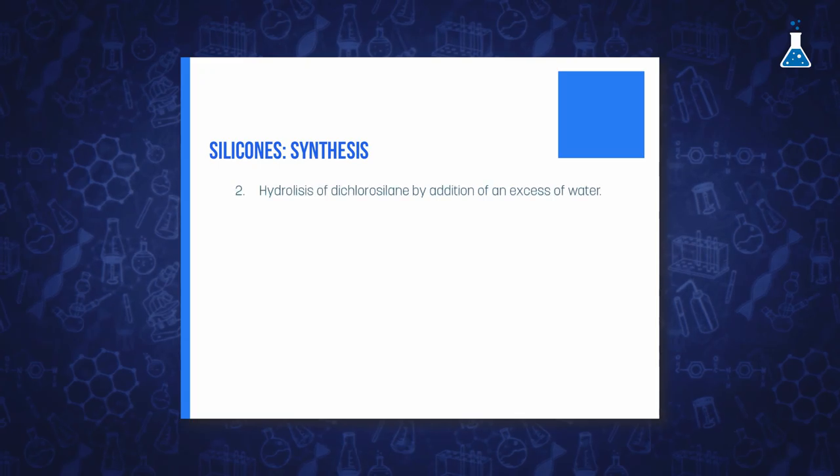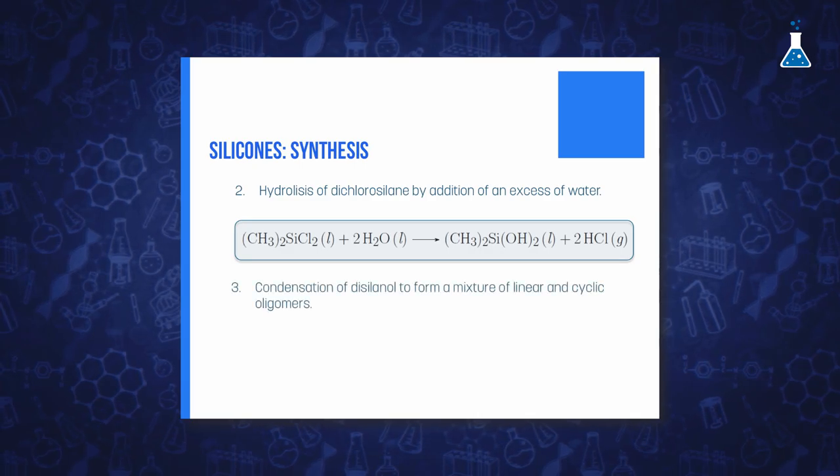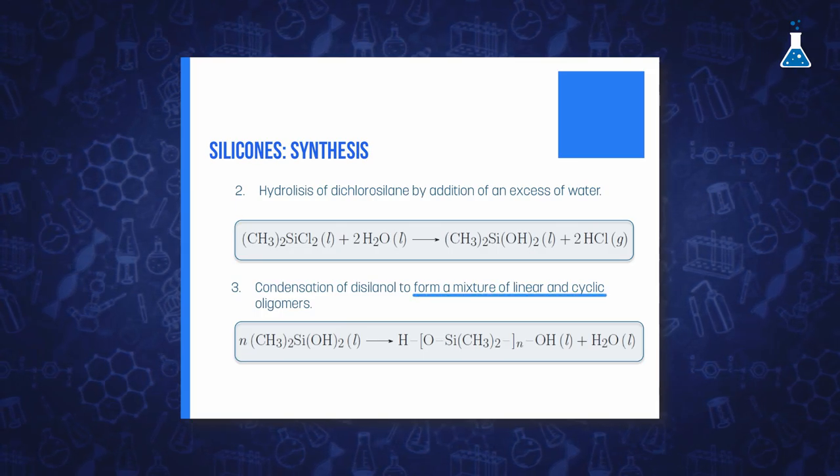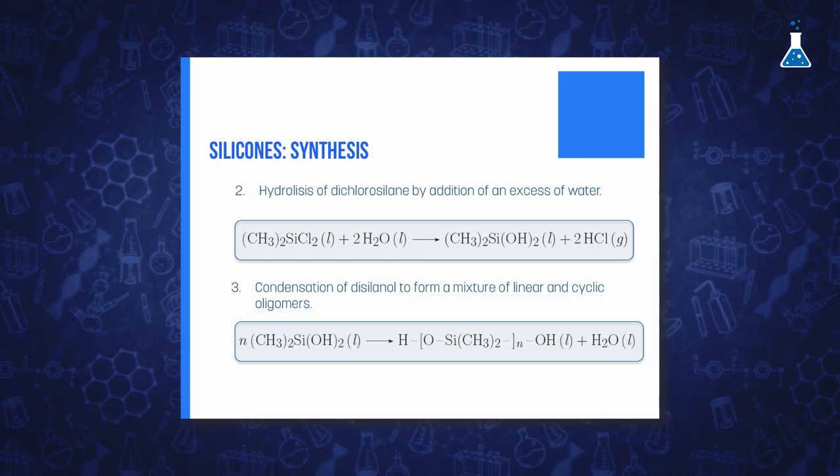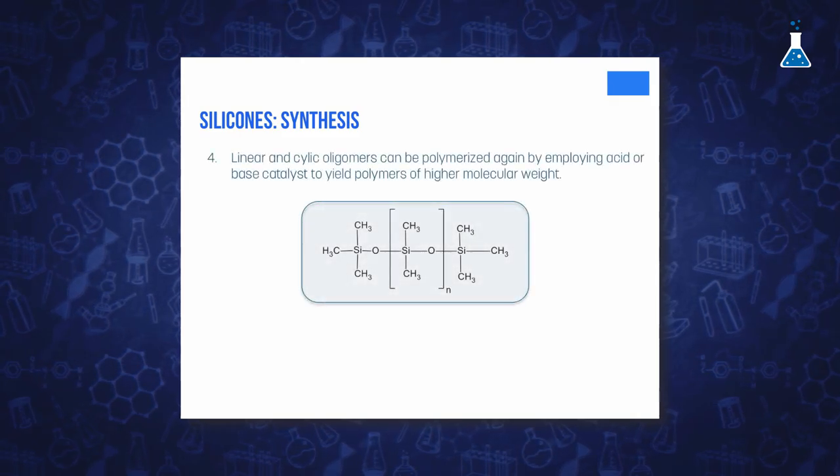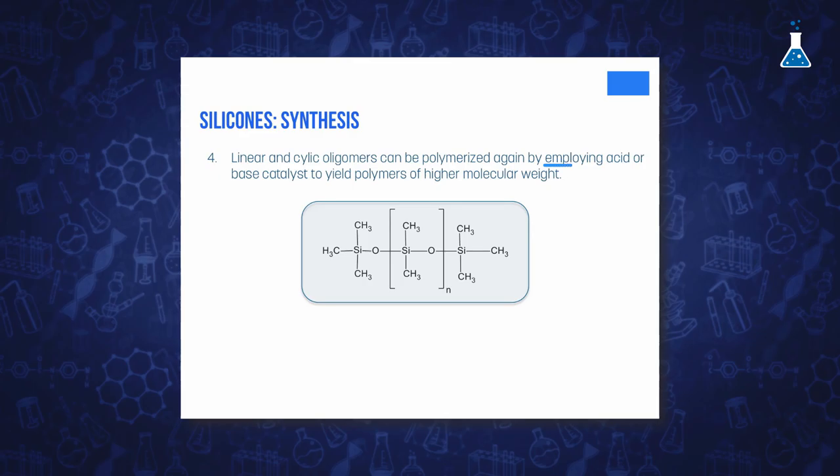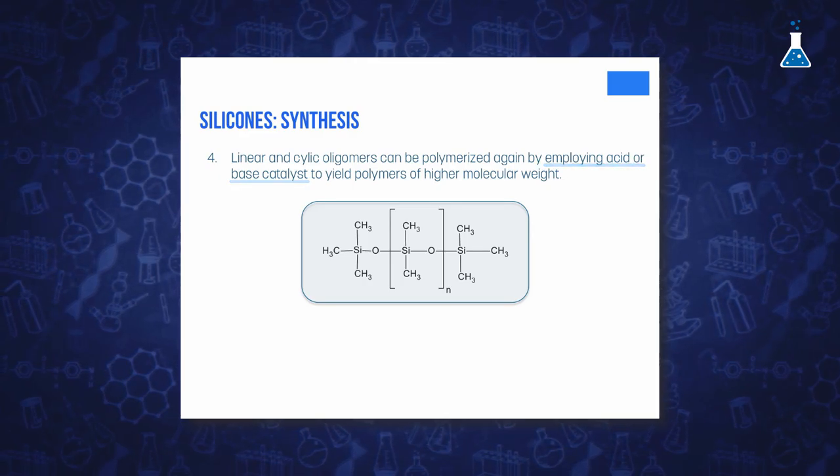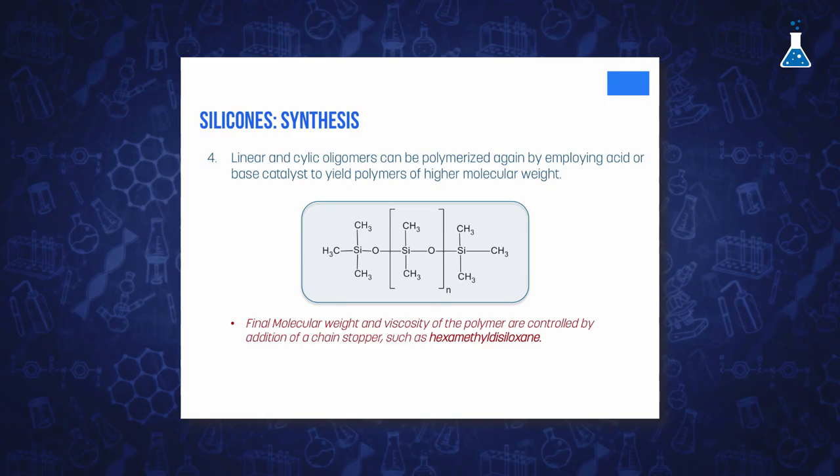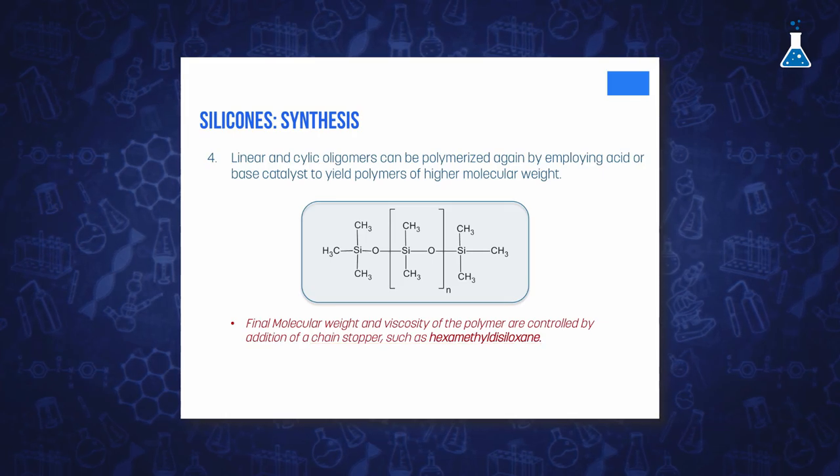The next step involves the hydrolysis of dichlorosilane by addition of excess water. The exothermic reaction gives a disilanol compound that readily condenses with hydrochloric acid acting as a catalyst to form a mixture of linear and cyclic oligomers that unfortunately are too short for many applications. But these linear oligomers can be condensed again, and the cyclic oligomers can also be polymerized by ring-opening polymerization, employing different acid or base catalysts. Polymer chain length, and therefore the final molecular weight and viscosity, are controlled by adding a chain stopper, such as hexamethyldisiloxane, to obtain end-blocked polydimethylsiloxane.